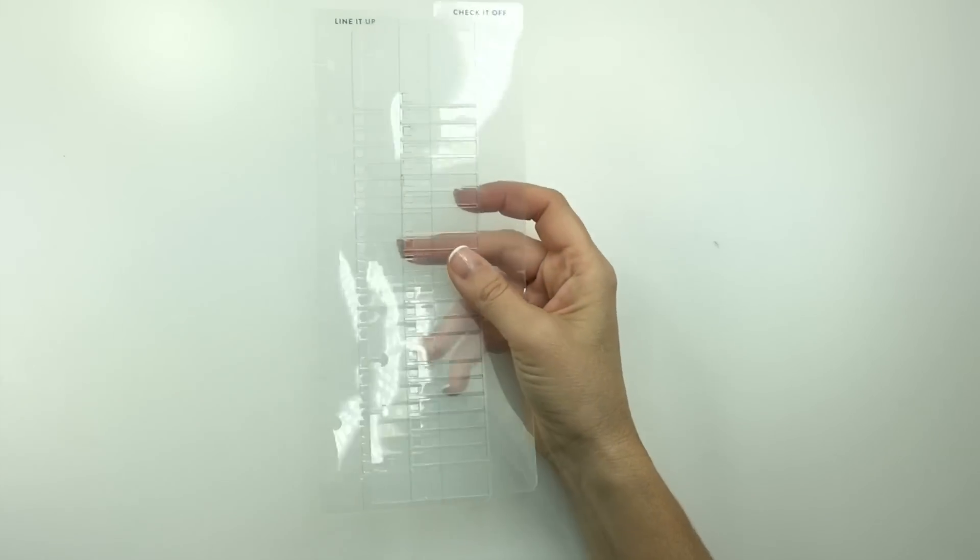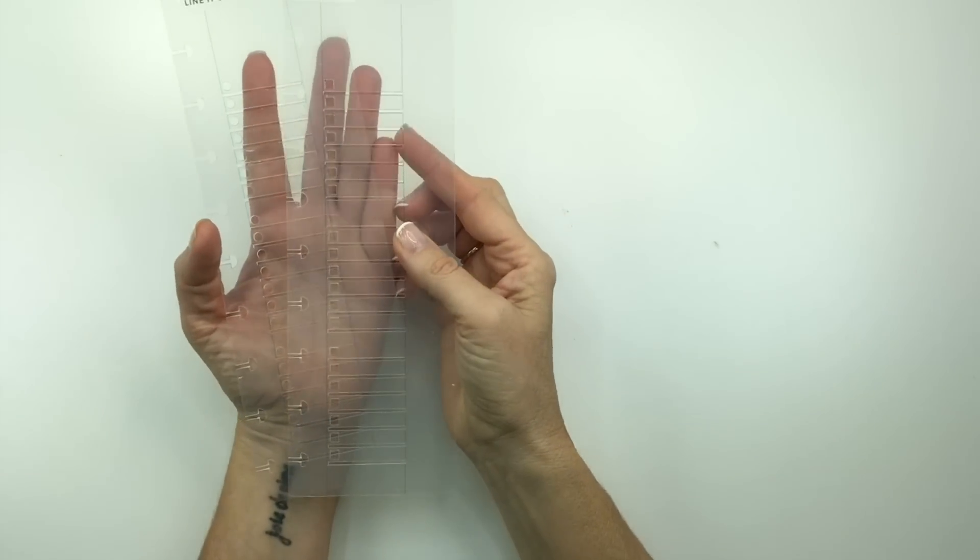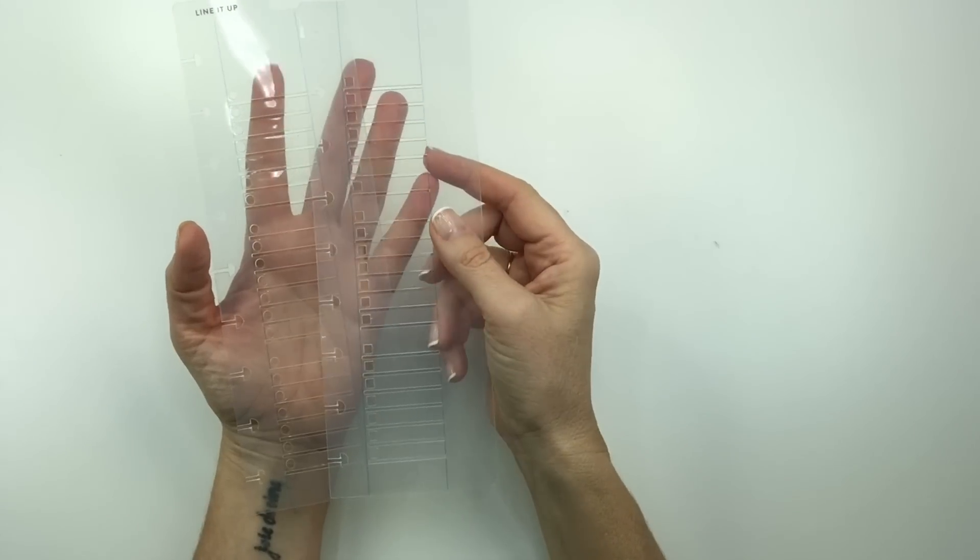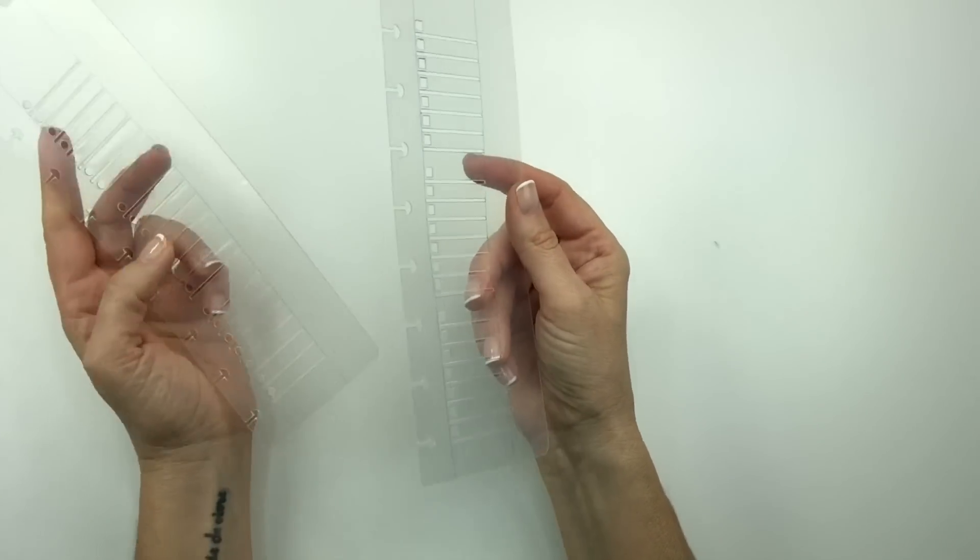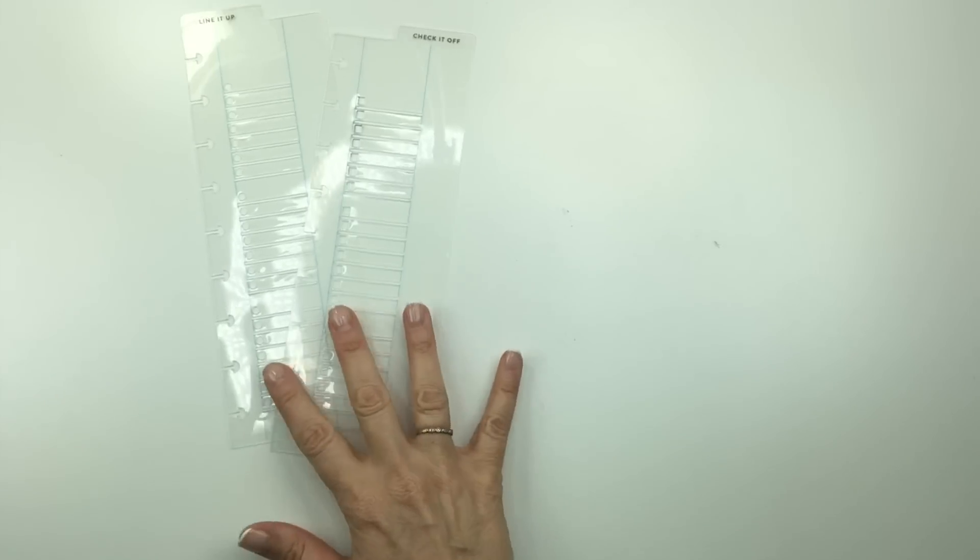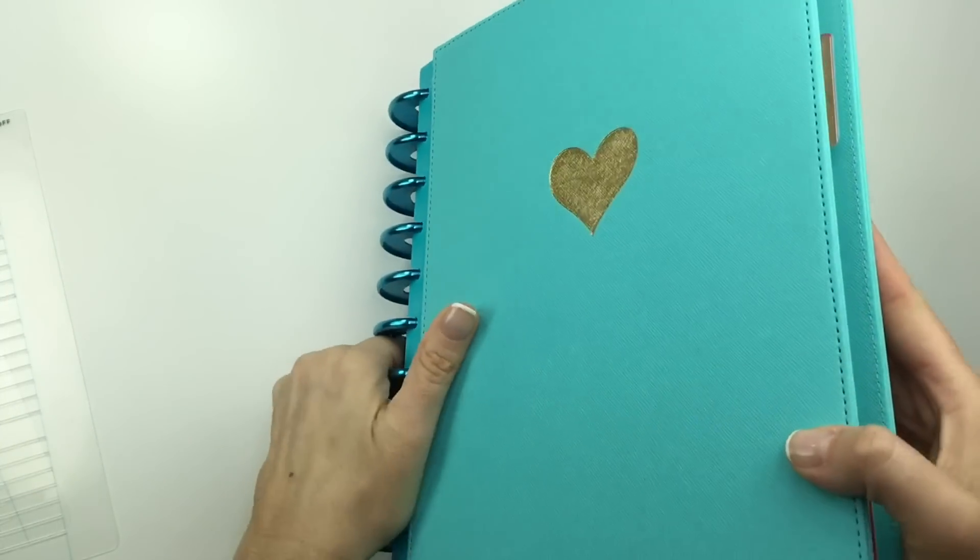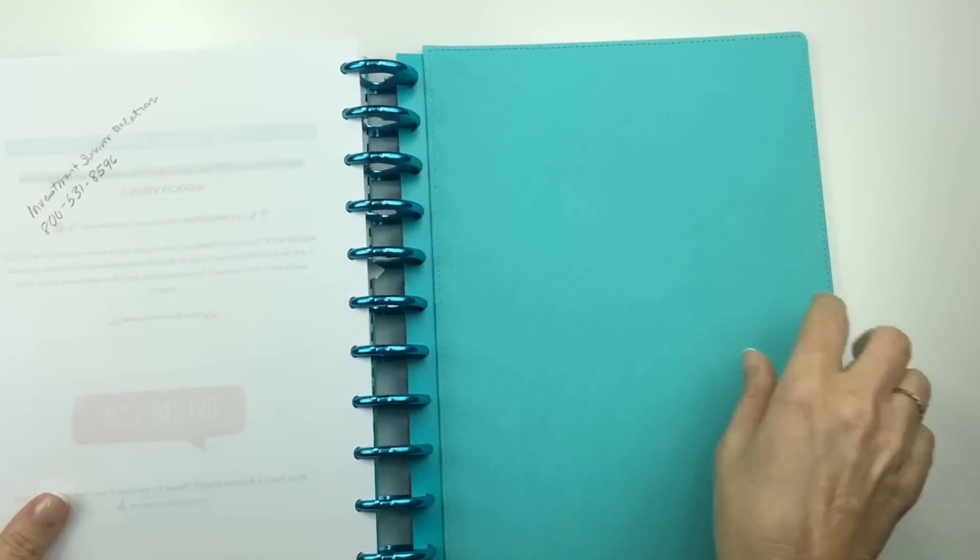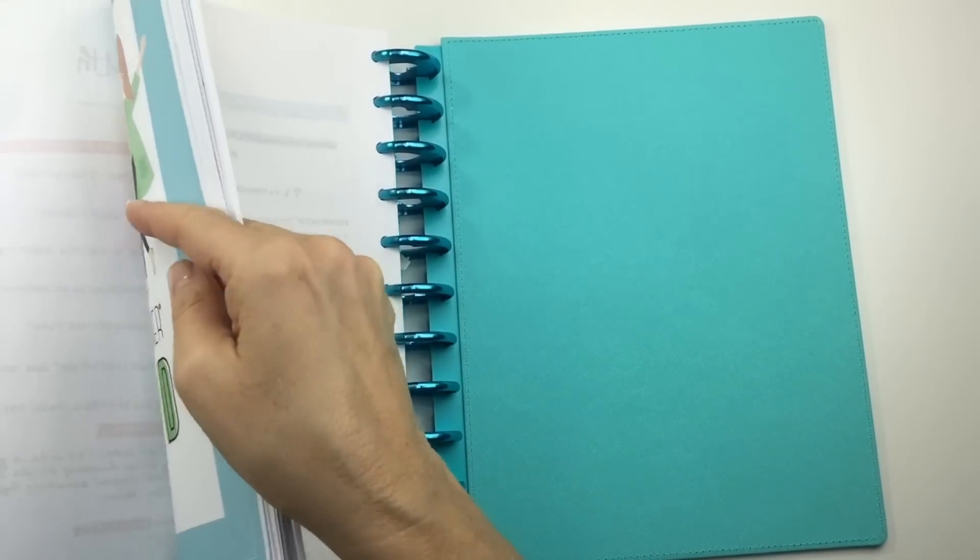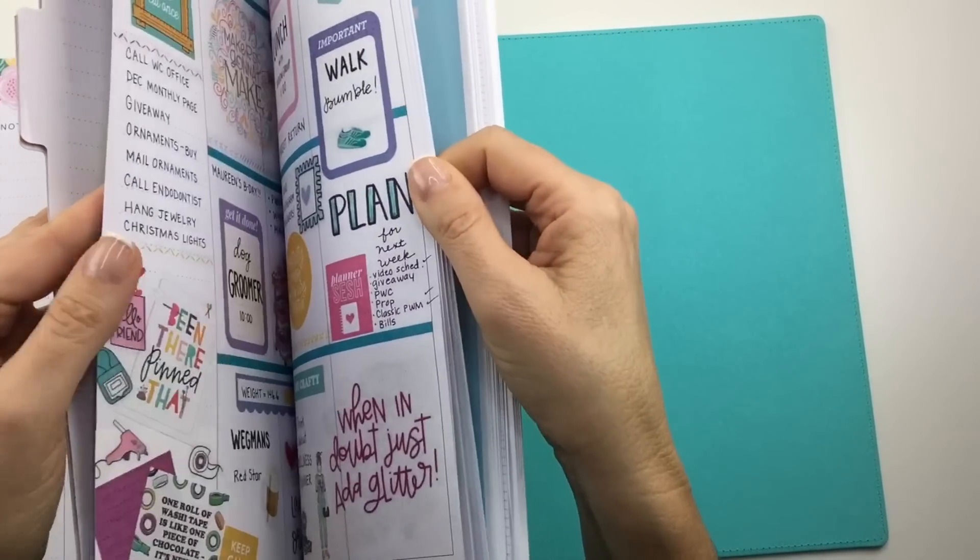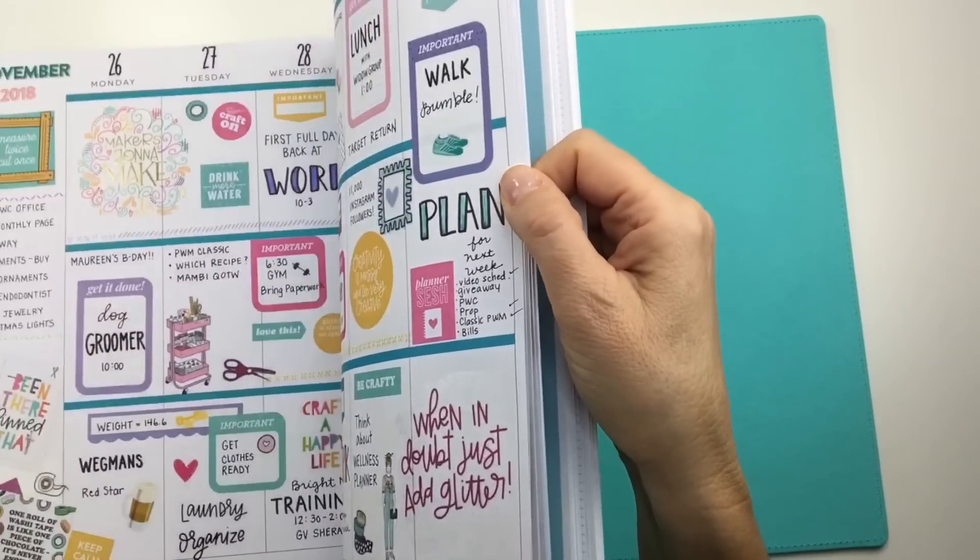Last thing I'll recommend is these checklist stencils from the Happy Planner. They're called Line It Up and Check It Off and these are super useful. I will show you how it looks in my planner. You know, the Happy Planner, generally not all the Happy Planners, but most of the time the blocks are just plain white and not lined. So unless you're using a sticker for your to-do lists, which I do, I vary it. I use stickers or I'll use these.